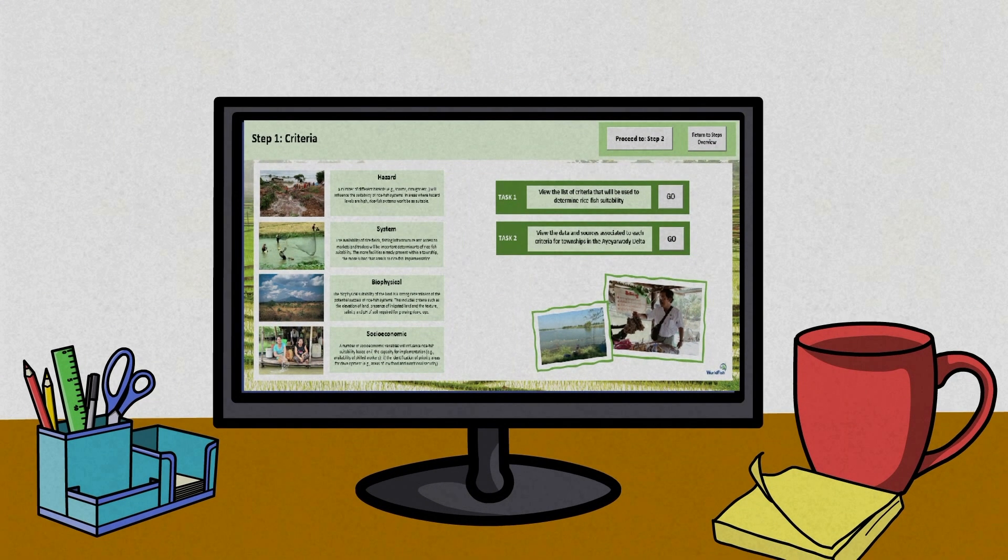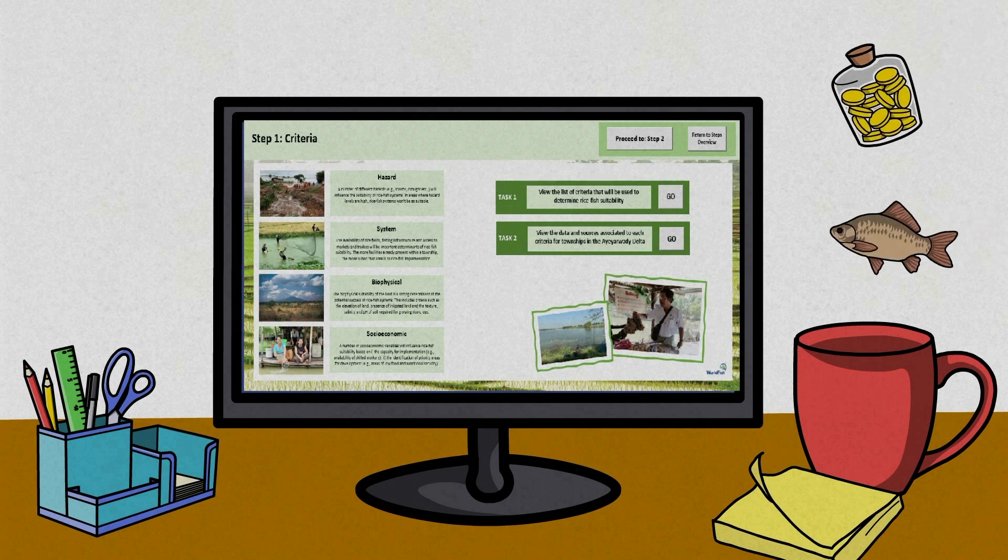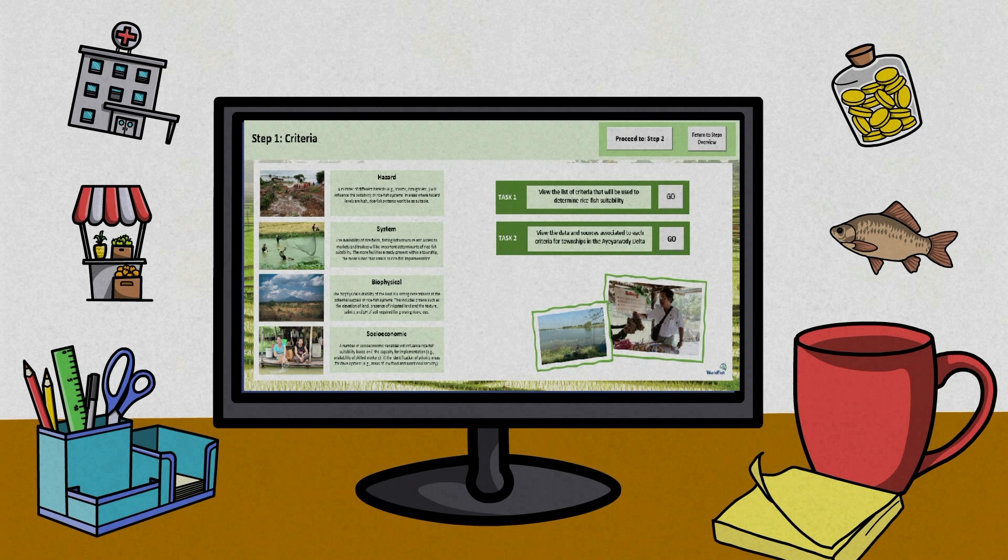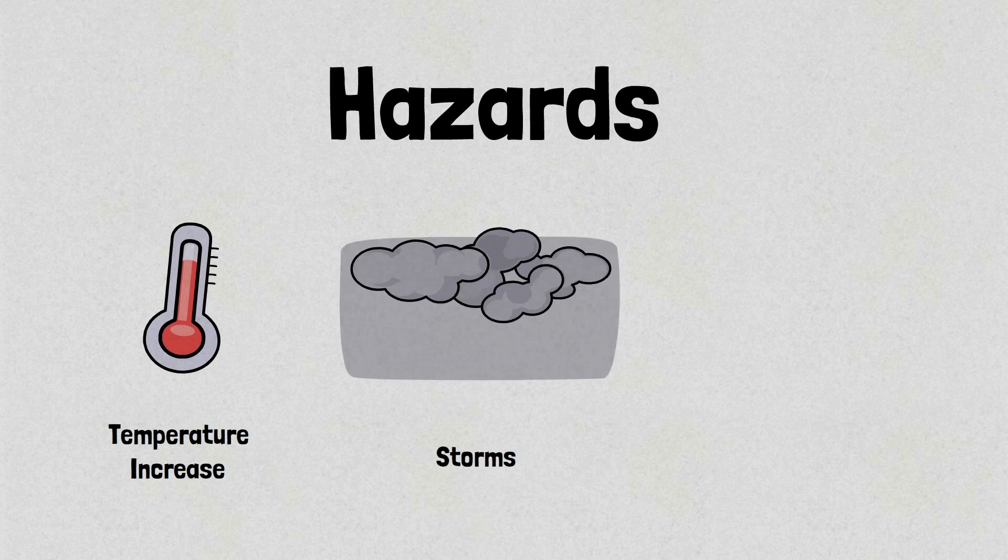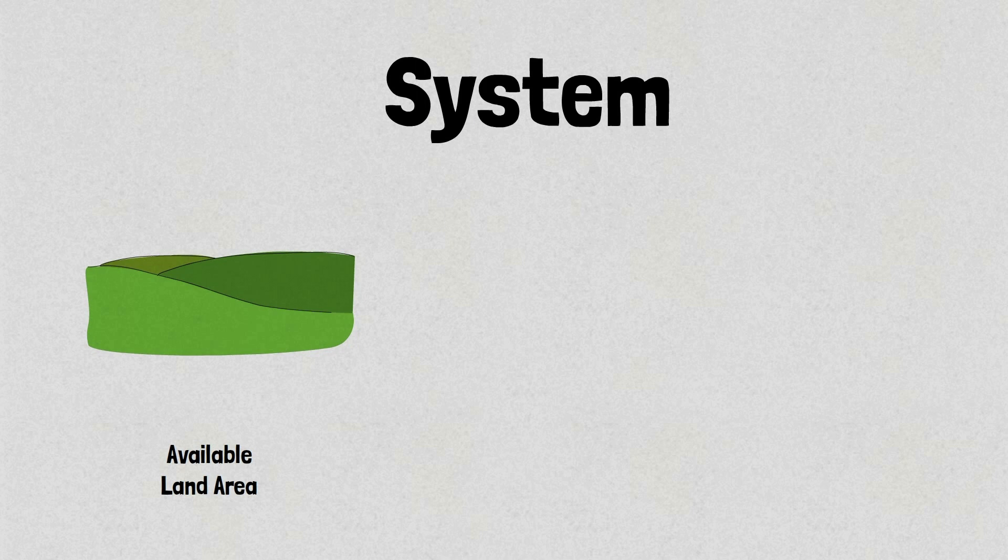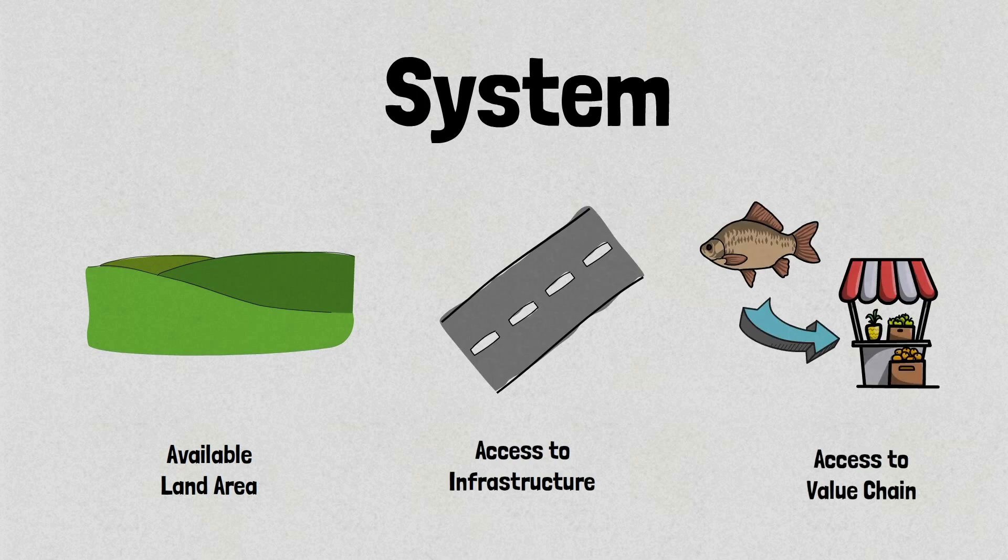The first step requires stakeholders to develop an understanding of the criteria used in the model. This can be broken down into four categories. Hazards that may impact the system including temperature increase, storms and flooding. System development including available land area, access to infrastructure and the value chain.